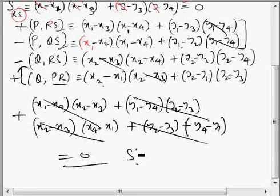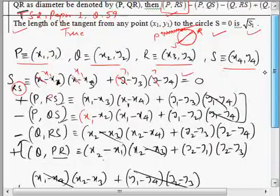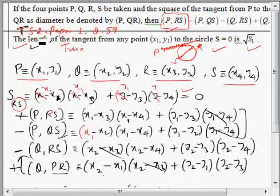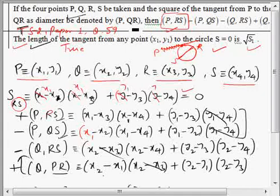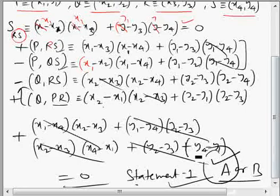So it means statement 1 is correct, statement 2 is correct. Now we have to choose answer A or B. If we have used this concept to prove this, if yes then answer is A. If there is no use of this formula then answer is B. Yes, using this formula we can show this, in fact we have used this formula to prove this, so answer is A.